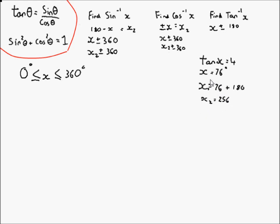There may be more answers, so let's check: 256 plus 180 — even adding just 100 to that takes it four over the limit, and the extra 80 takes it over 360. So we only have two answers in that region, and that's completely fine.